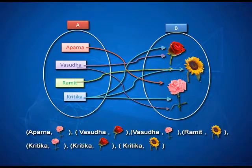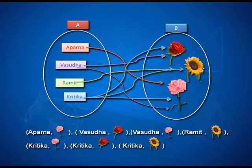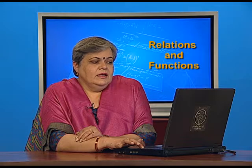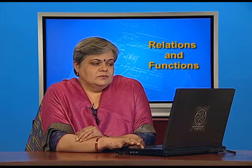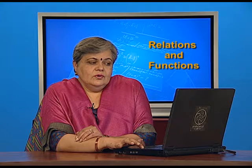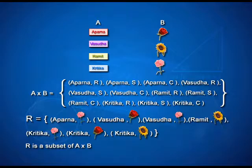Instead of using this representation, which is referred to as the arrow diagram, I can list this association as an ordered pair. So Aparna is now paired with carnation, Vasudha with rose and carnation — so I have two ordered pairs: Vasudha and rose, Vasudha and carnation — and similarly other ordered pairs. These ordered pairs can always be put in one set, and this set is referred to as a binary relation from set A to set B. If I take an element of this set, say (Vasudha, rose), then I say that Vasudha comma rose belongs to R, the same as saying that Vasudha is R-related to rose. In plain simple English, it means that Vasudha likes rose.